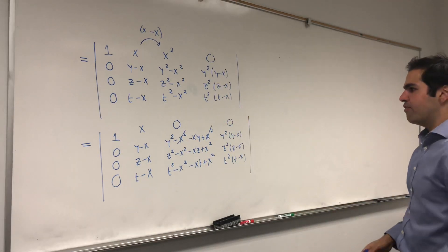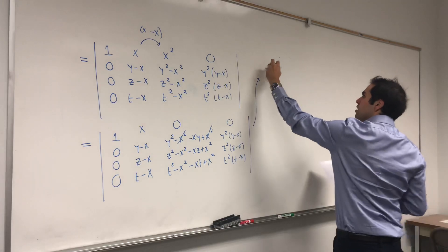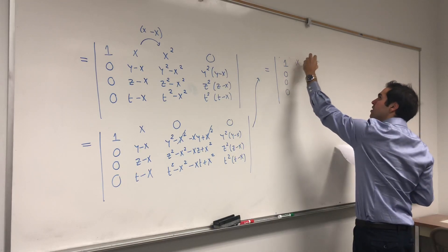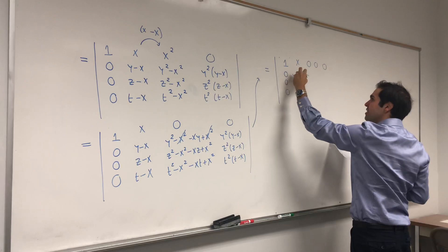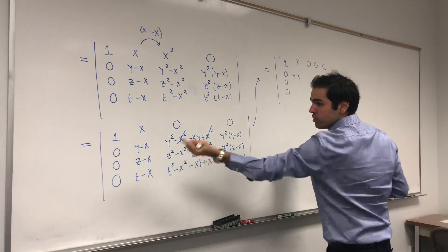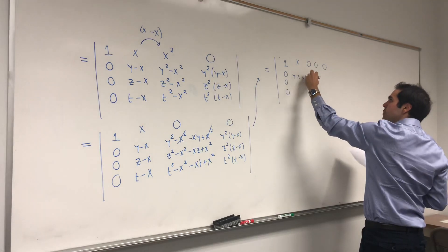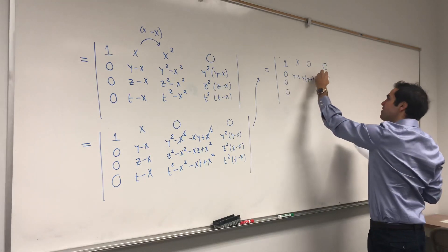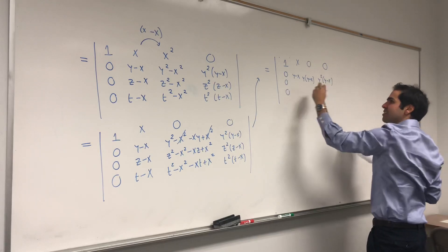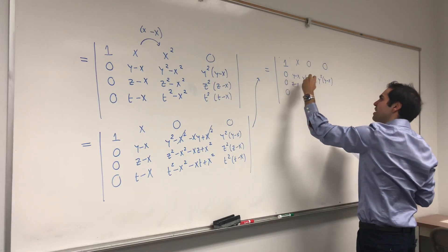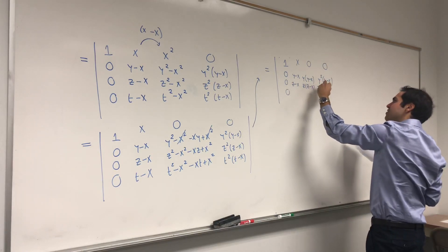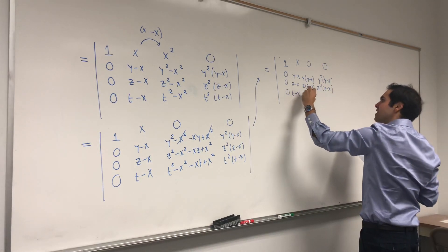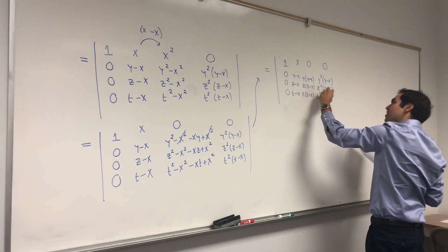After this column operation, the matrix becomes: row 1: 1, 0, 0, 0; row 2: x, 0, 0, 0 — notice the zeros appearing; and then the remaining rows show y−x with a common factor of y, giving y(y−x); z(z−x); and t(t−x); along with y²(y−x), z²(z−x), t²(t−x) in the last row.